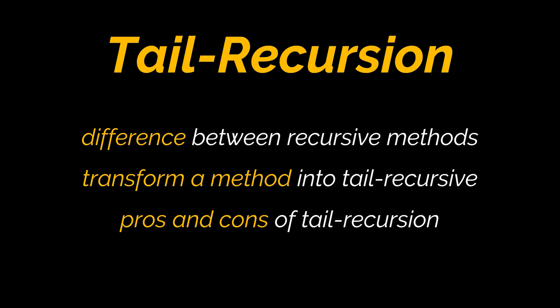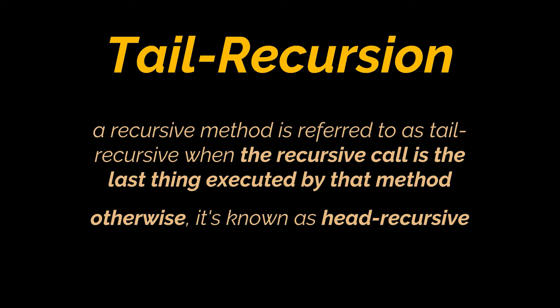Now simply put, a recursive method is referred to as tail recursive when the recursive call is the last thing executed by that method. Otherwise it's known as head recursive.